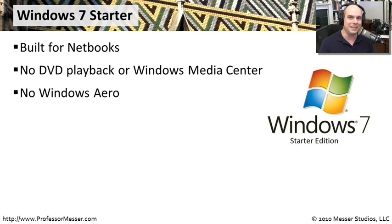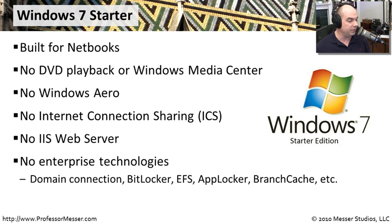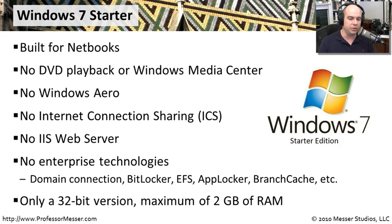The graphics on these tiny netbooks were not designed for a lot of functionality — they are bare-bones portable systems. So you also don't have things like internet connection sharing, no web server, and none of the enterprise technologies like BitLocker, EFS, AppLocker, or other enterprise functions. There is only a 32-bit version of Windows 7 Starter — no 64-bit — and it's limited to no more than 2GB of RAM. This version is really designed for a bare minimum system, which fits perfectly with netbooks.